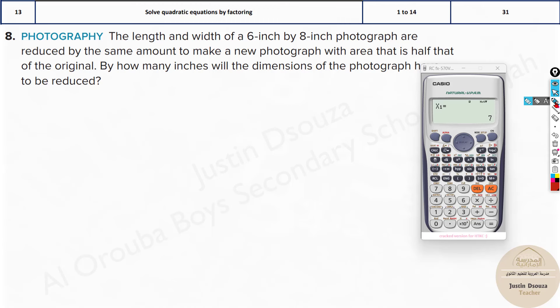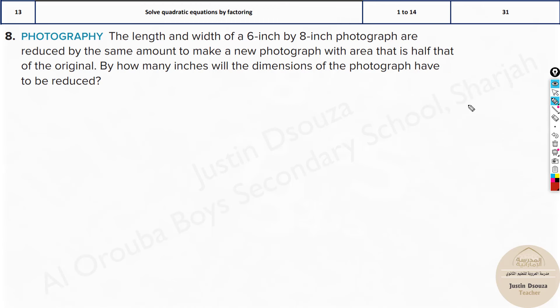Same way, please try this problem and then see the explanations in this video. Here the length and width are given as 6 by 8 inches. They are reduced by the same amount to make a new photograph with area that is half of the original area.